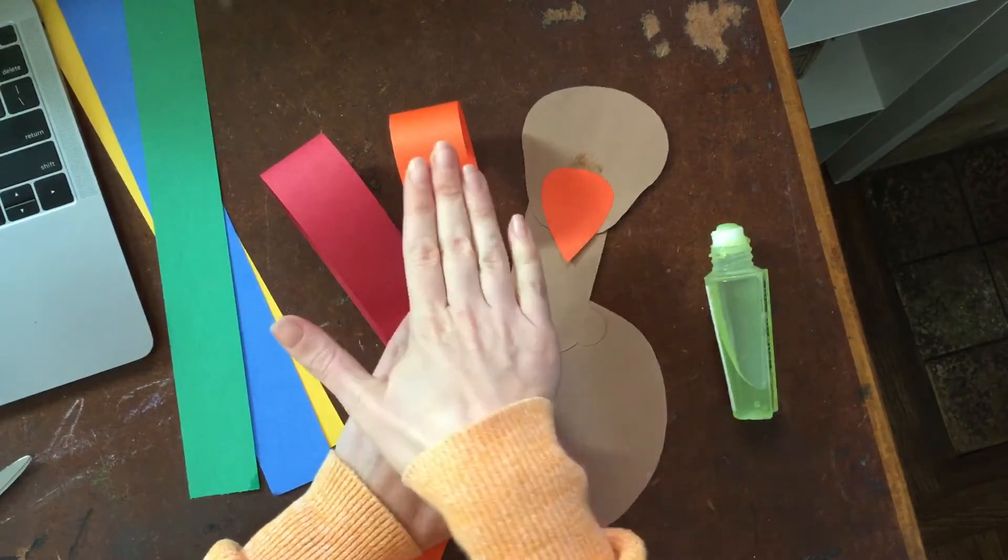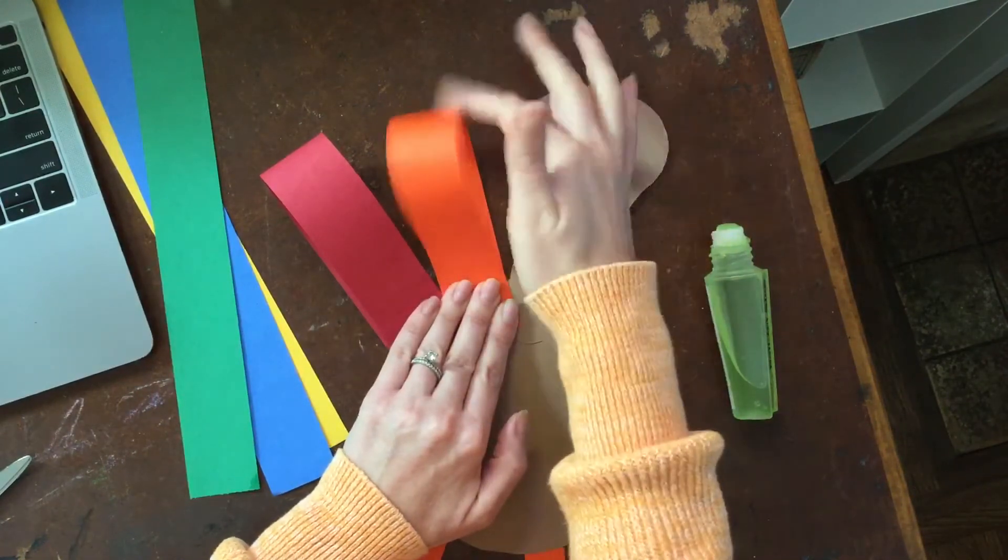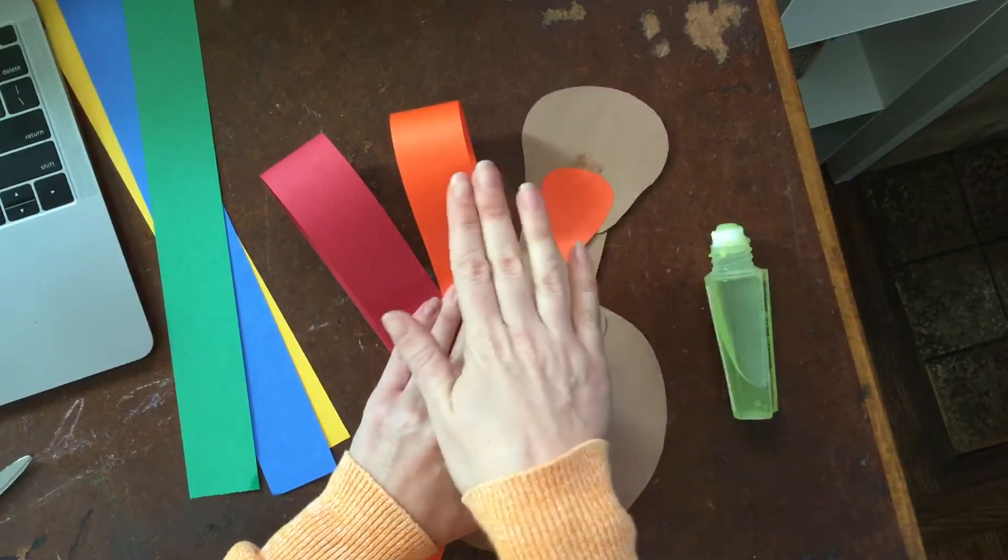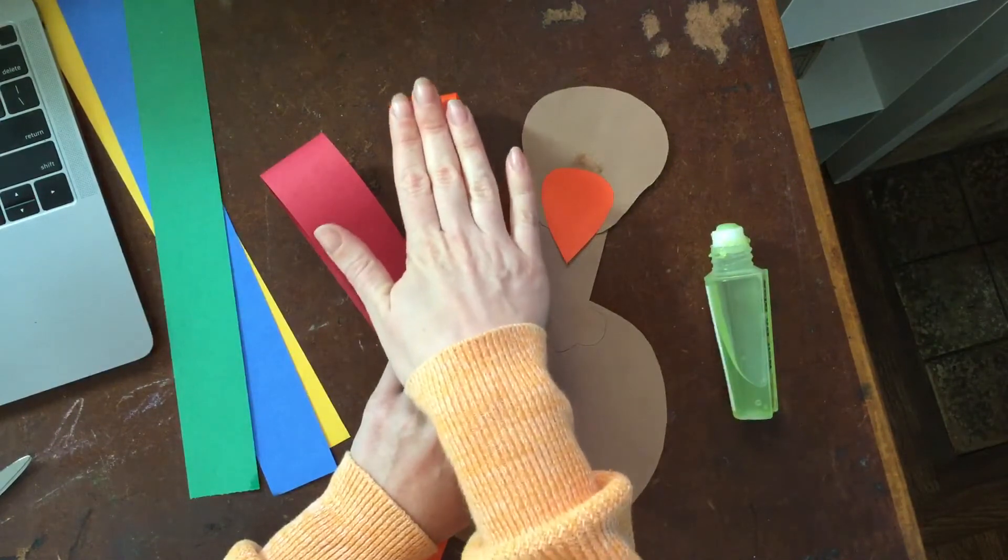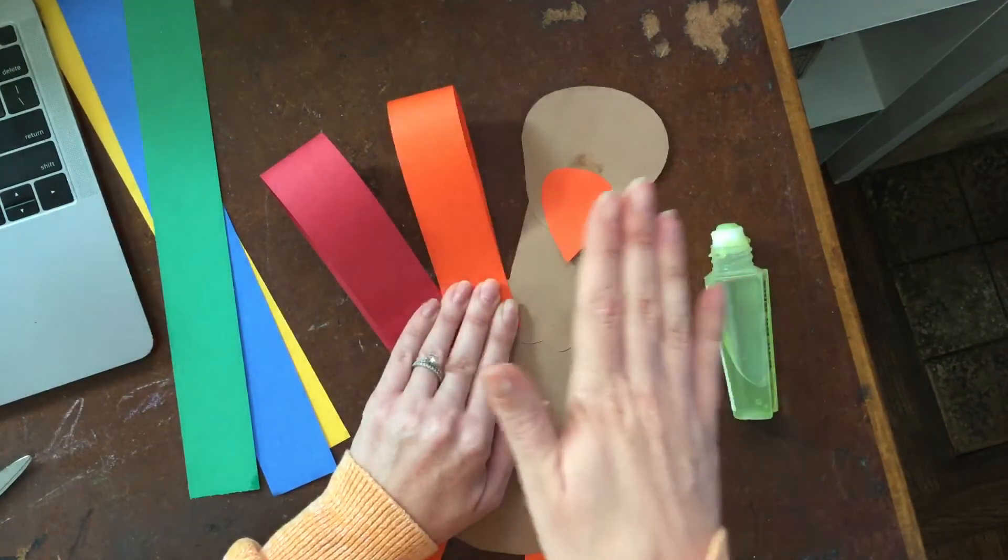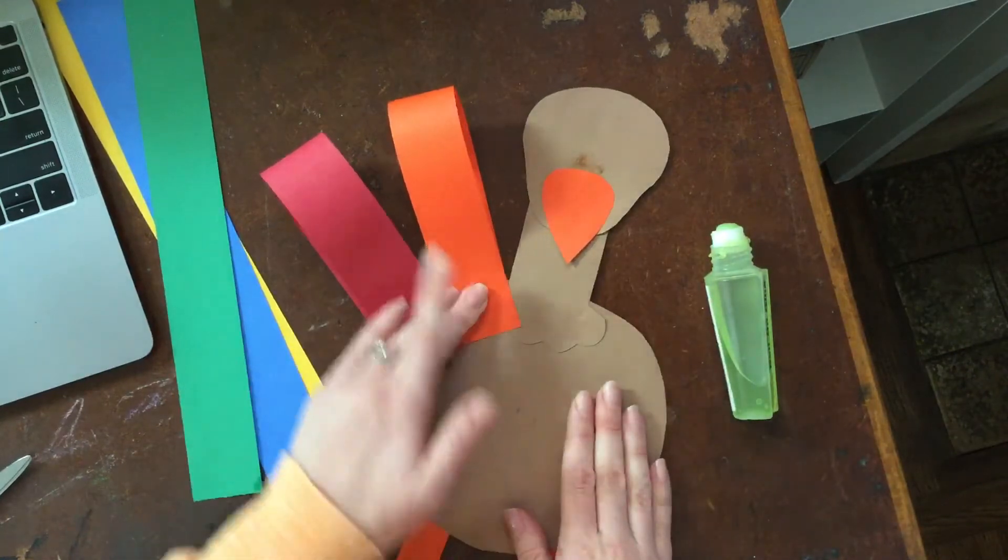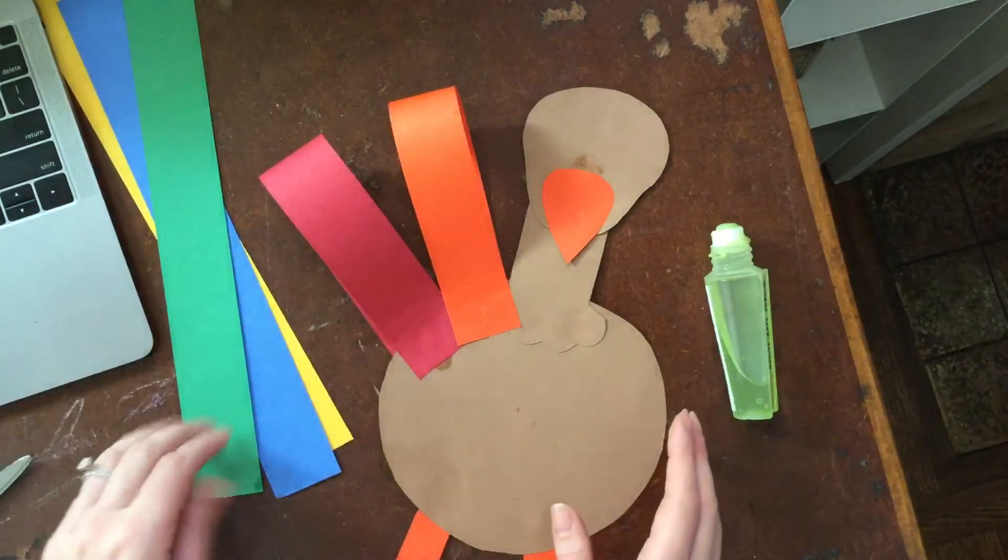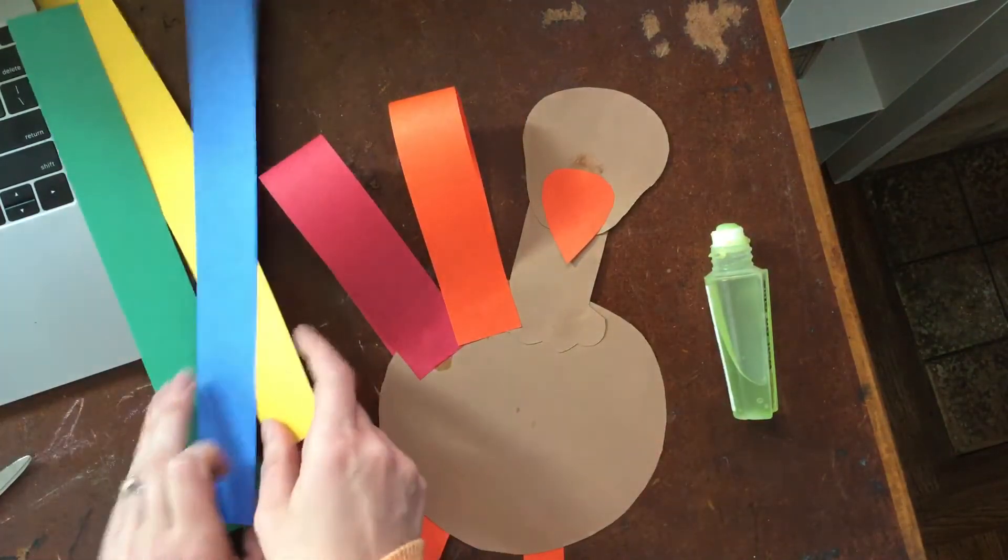And I can also kind of just on this curved part here. I don't need to fold it, like press it really hard, but I could give it a little press. And then it won't be so bouncy. It won't want to pop up so much.